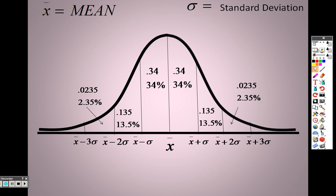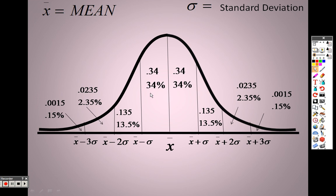Then we have 2.35% in the next section out on each side, which takes us up to 99.7% of the population lying within three standard deviations. The farther out you get, the lower the percentage — it's 0.15% on each far tail. The lower the percentage, the less likely it is for people to fall in that area. That's why according to the bell curve you have fewer people on either end, and the bigger chunk lies right in the center.